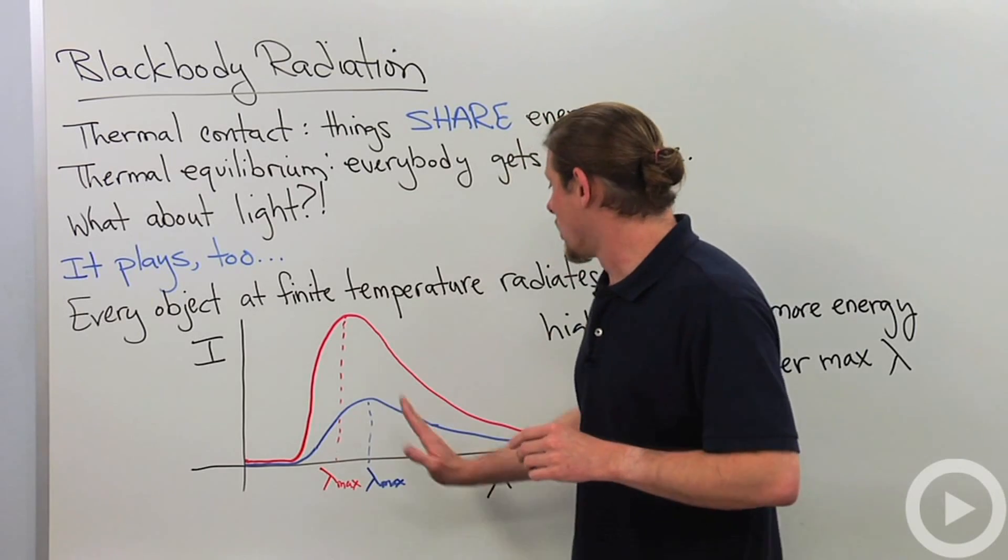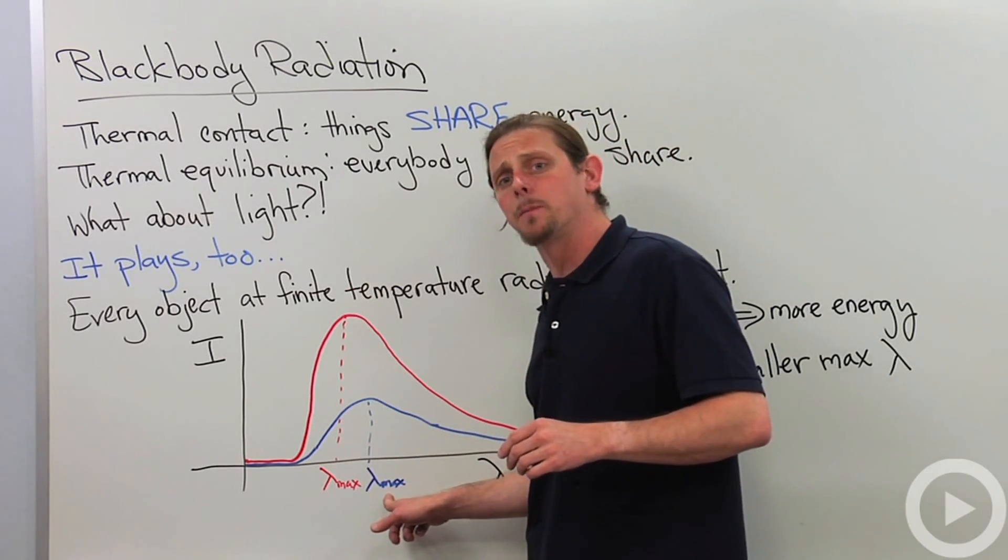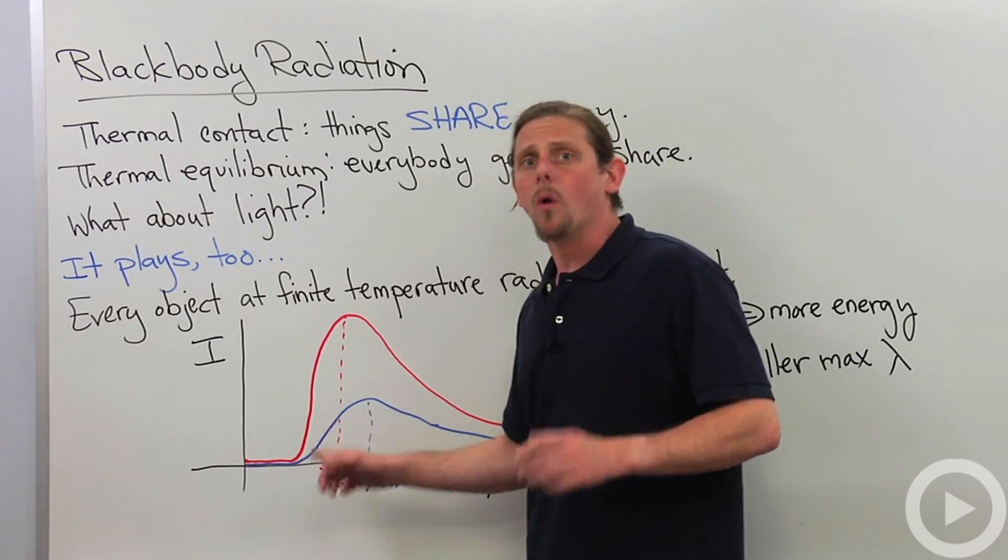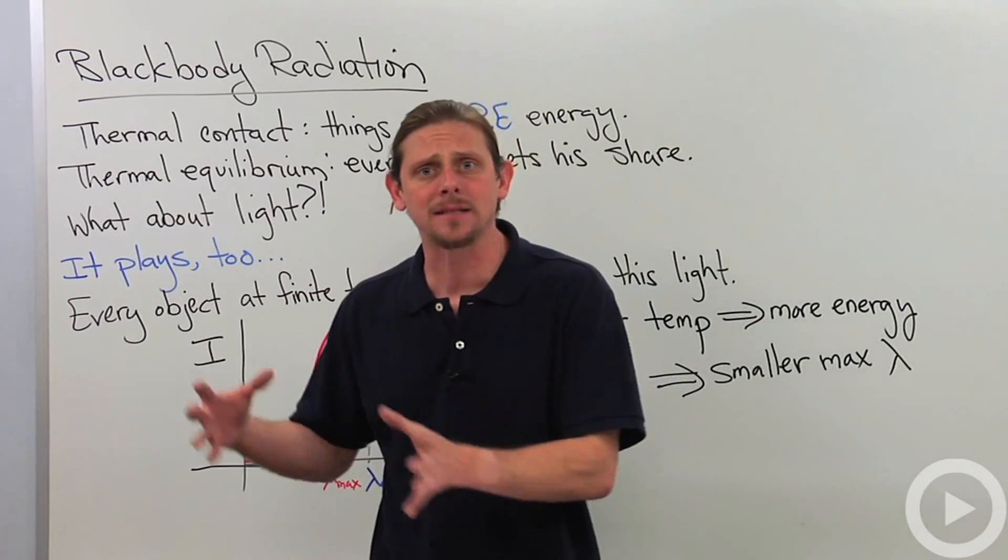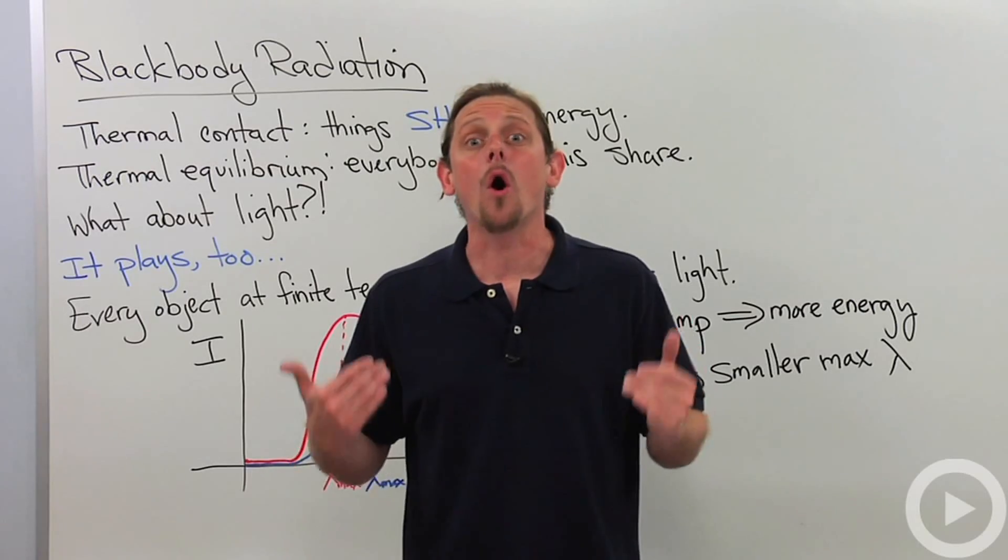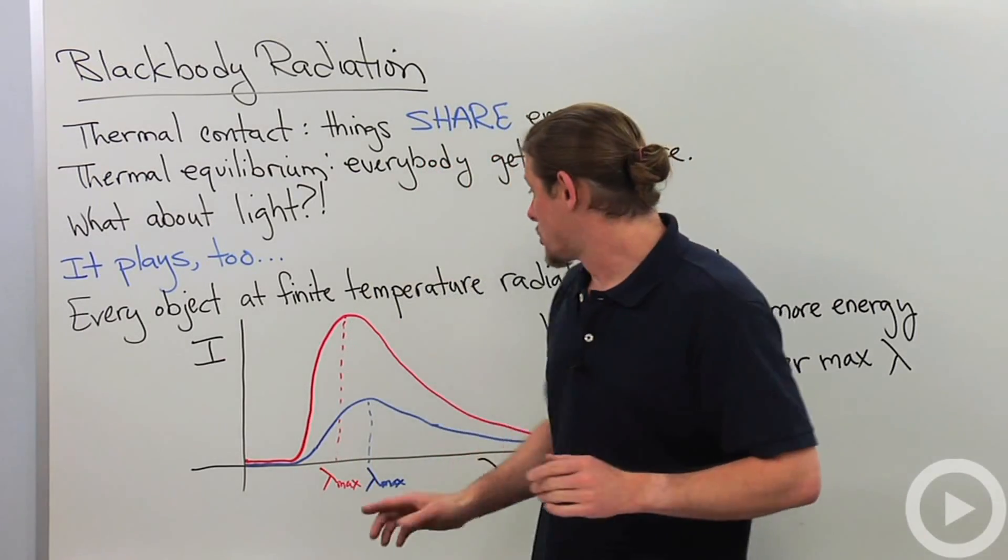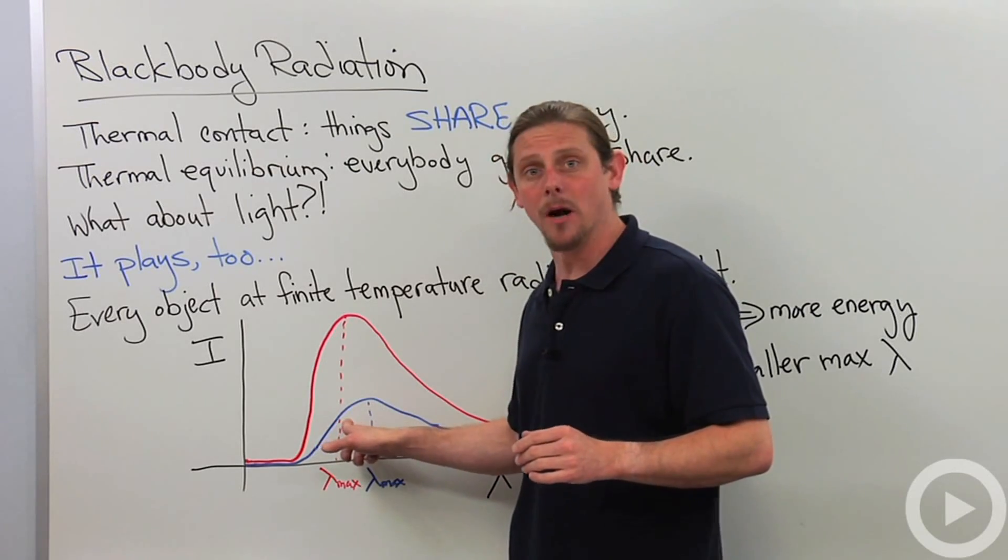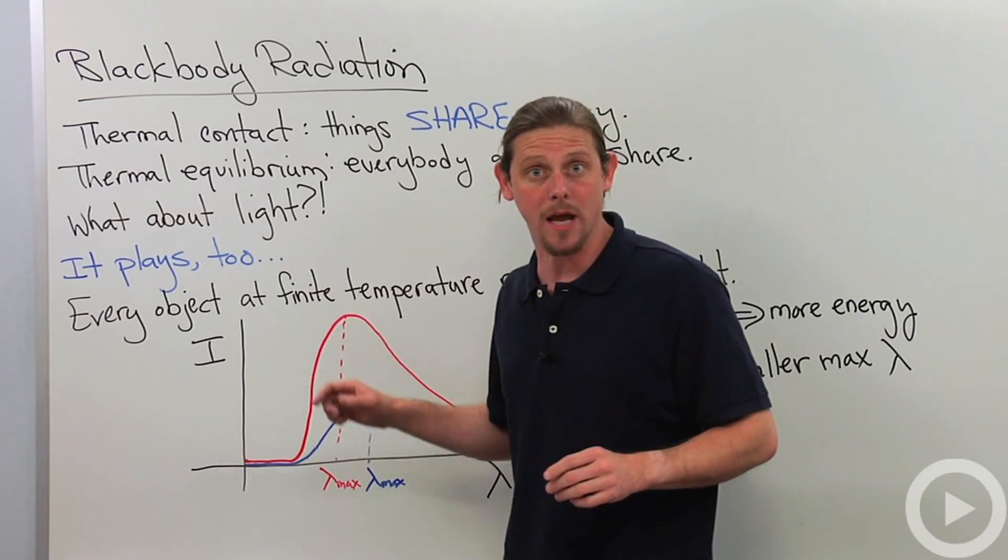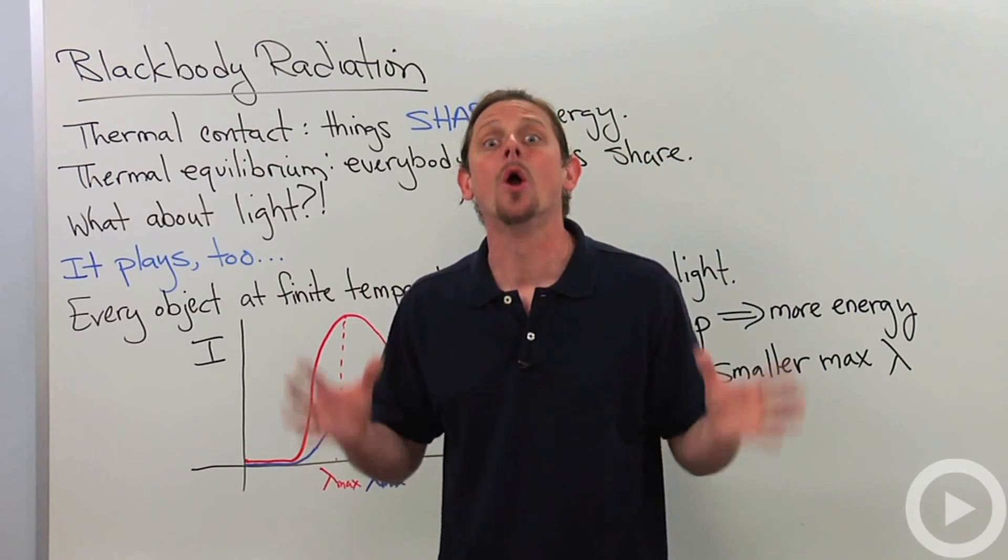So that means that hotter objects give off a lot more light than cooler objects do. Similarly, we find that there's a little peak here. Notice that the cooler object peaks at a higher wavelength than the hotter object. So what that means is that as an object gets hotter, it not only radiates more just overall, it also starts to radiate at lower wavelengths. So here, this one wasn't radiating very much at that wavelength before, but then we heat it up, and now that becomes the maximum radiation. So that's the way that blackbody radiation works.